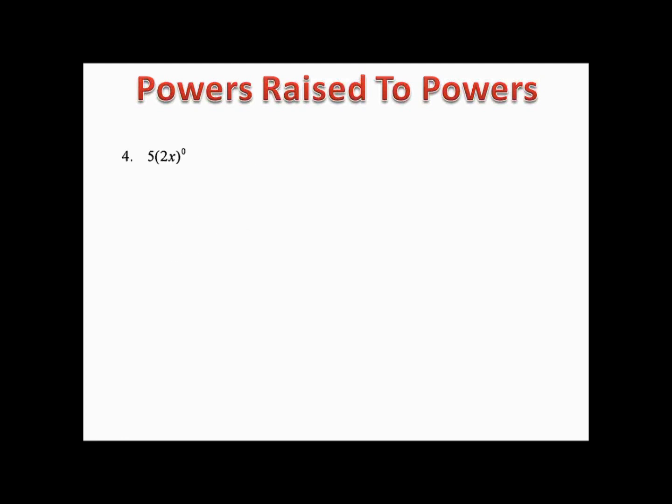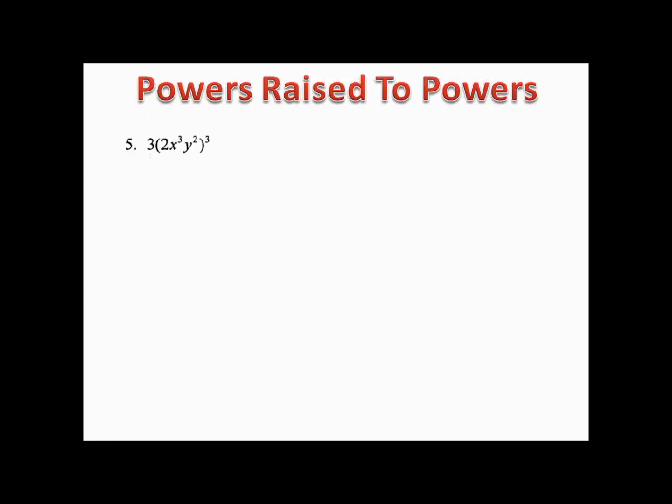Example four: we have (5 · 2x)⁰ — five times 2x raised to the zero power. We distribute that zero, so we have 5 times 2⁰, which is 1, times x⁰, which is also 1. So we just have 5 times 1, which is 5.